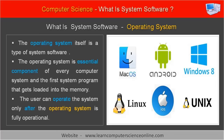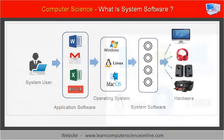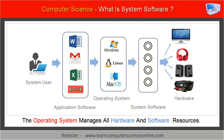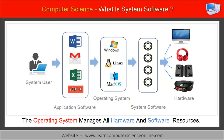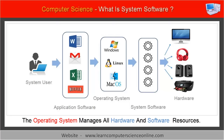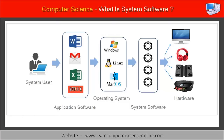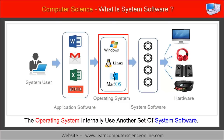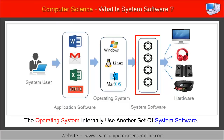The user can operate the system only after the operating system is fully operational. The operating system is responsible to manage and control all the system resources, which includes all hardware and software components. However, the operating system internally uses another set of system software components to communicate with the different hardware components.